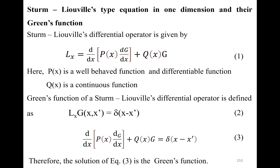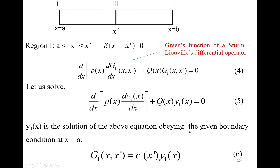This is the property of the Dirac delta function. Now substitute equation 1 into equation 2 to obtain equation 3. LX is nothing but your equation 1 — you substitute the expression for LX into equation 2 to get equation 3. The solution here is G, the Green's function.